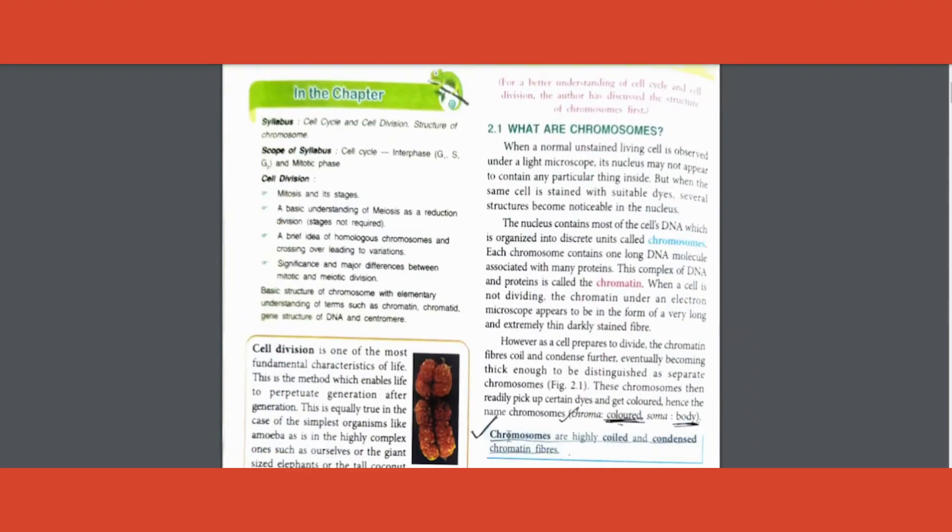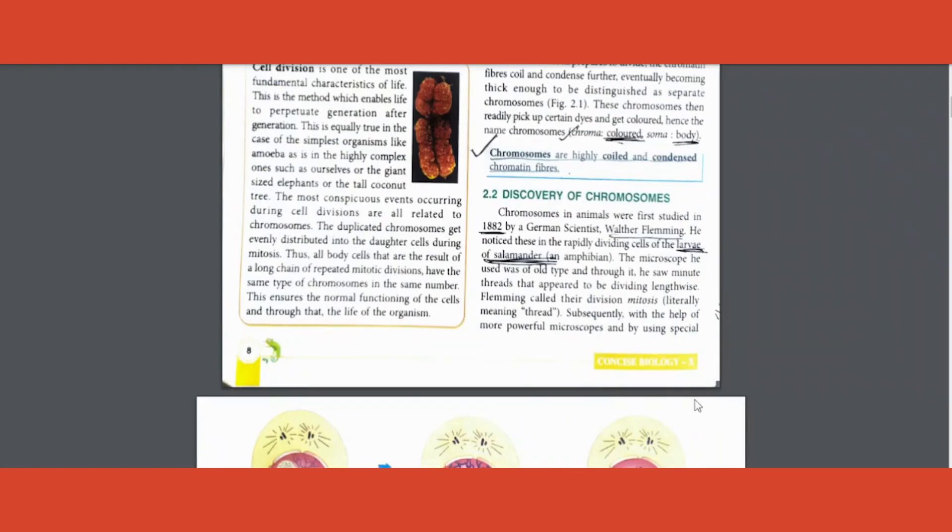First and foremost, you should definitely know the definition of chromosome - they are highly coiled and condensed chromatin fibers. What is the word meaning of chromosome? One more question has come - that is colored bodies. Other options will be given in MCQ, please pick the correct one.